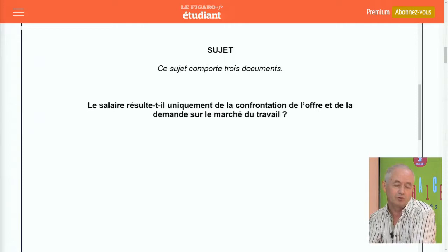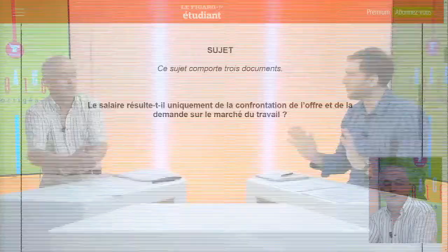Il y a quand même des précisions développées par certains économistes. Sans rentrer trop dans le détail, il faut peut-être parler du salaire d'efficience, de la théorie dite des contrats implicites, et de la théorie de délégation du marché du travail. Il y avait un certain nombre de choses à dire dans cette première partie.